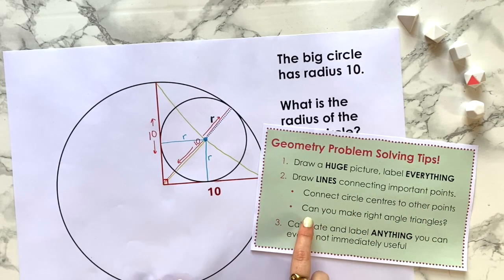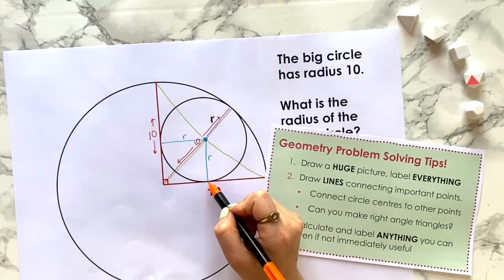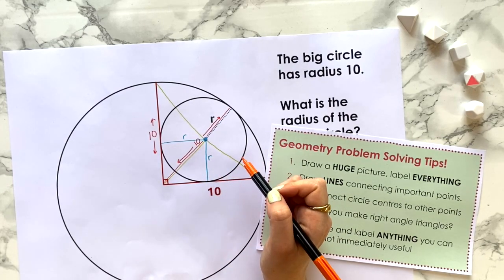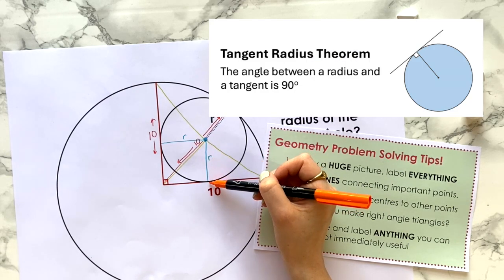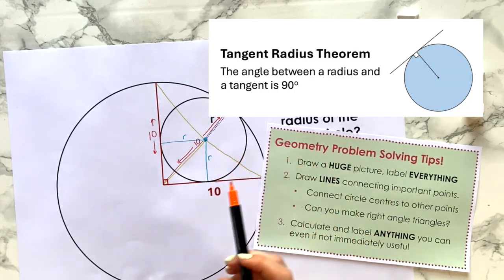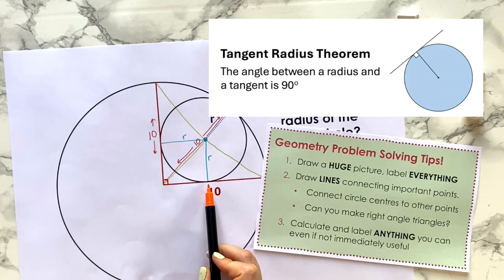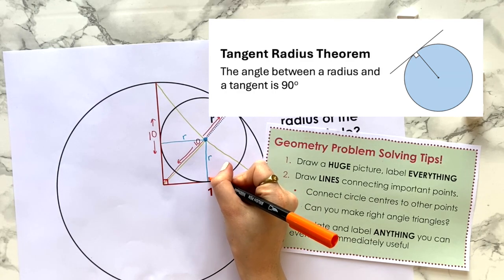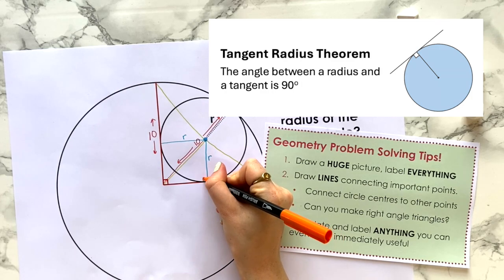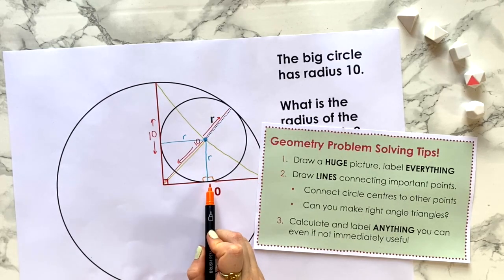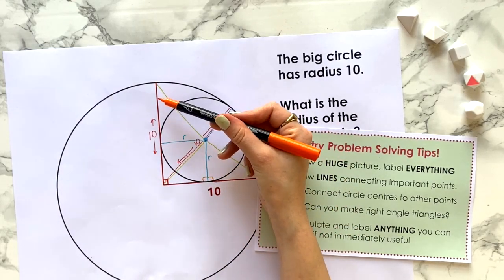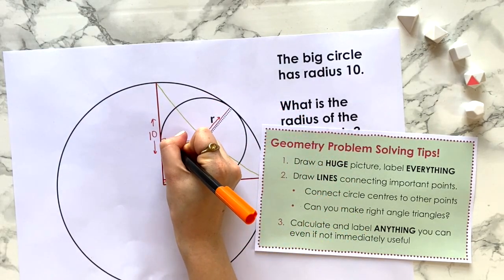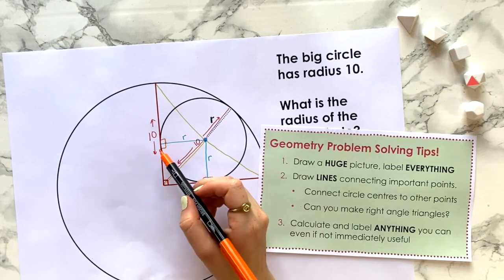Our next point here says: can you make right angle triangles? We've got some angles that look a bit right-angley. Are they right angles? Well, I think there's a circle theorem that says something like: if you have a radius of a circle and it meets the tangent of the circle at that point, then that point is at a right angle. So I can confidently say that these are right angles here, and again here we have another radius meeting the tangent to the circle, so again right angles here and here.